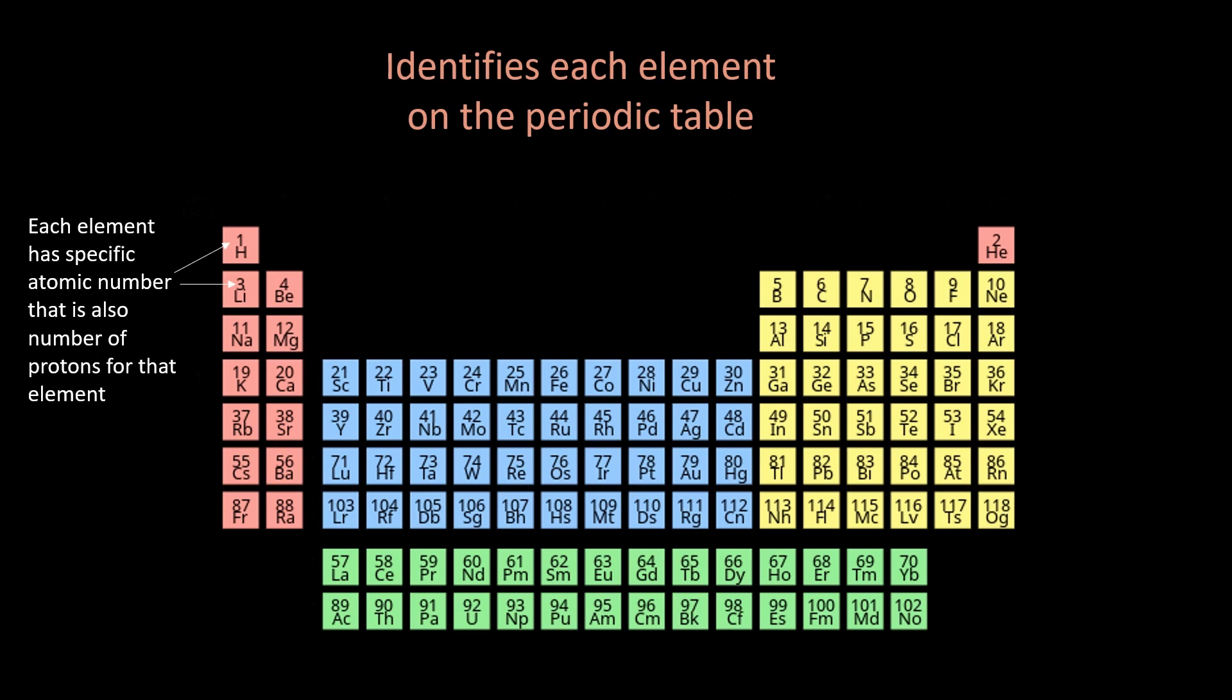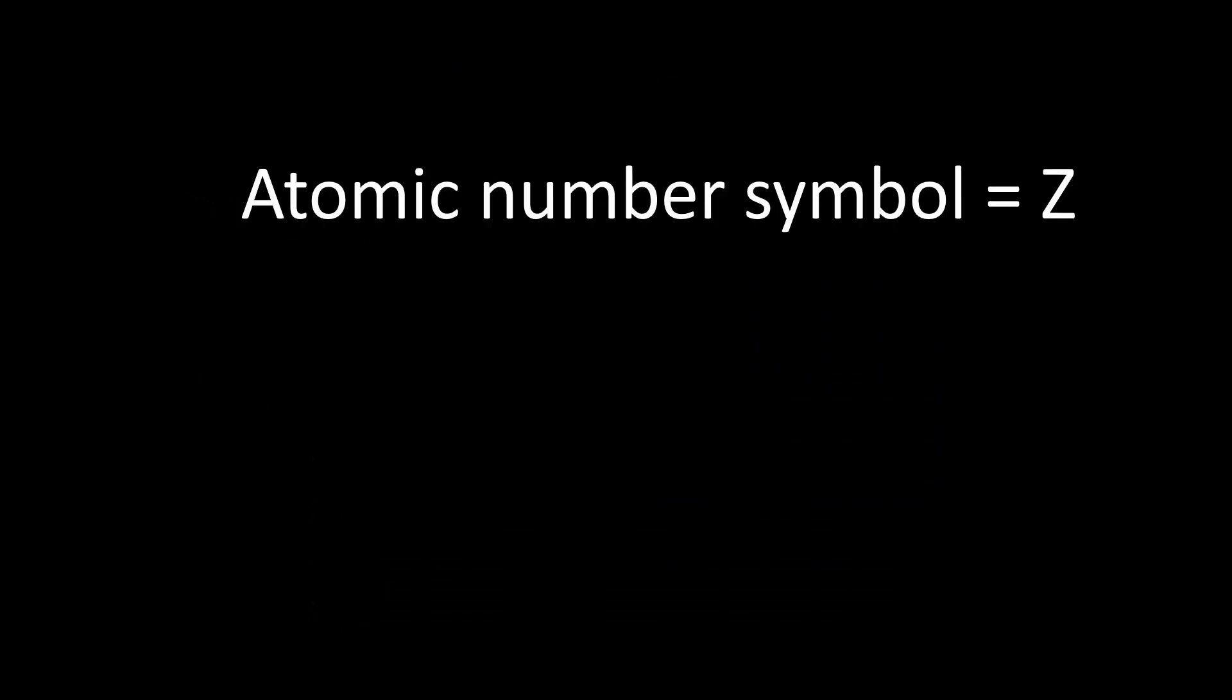For example, hydrogen has one proton, so it has an atomic number of one, whereas carbon has six protons, so it has an atomic number of six. The atomic number is represented by the symbol capital Z.